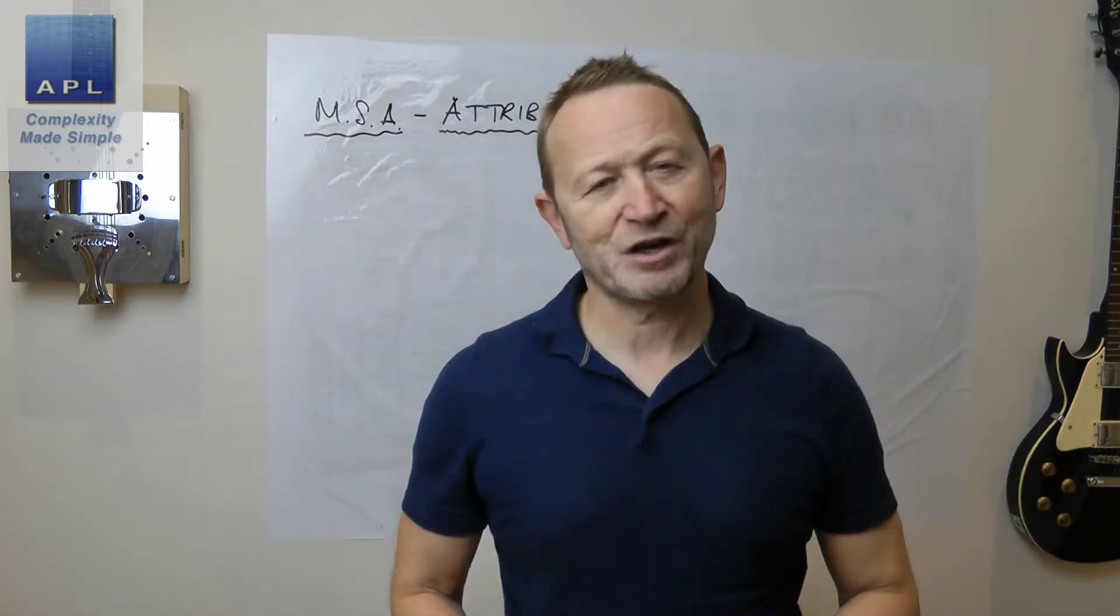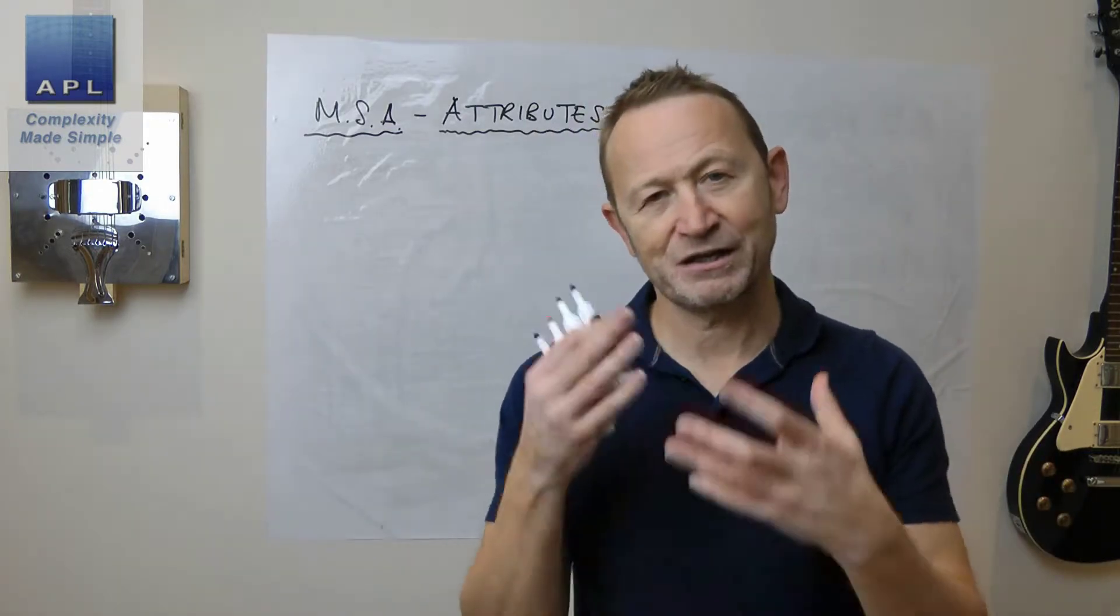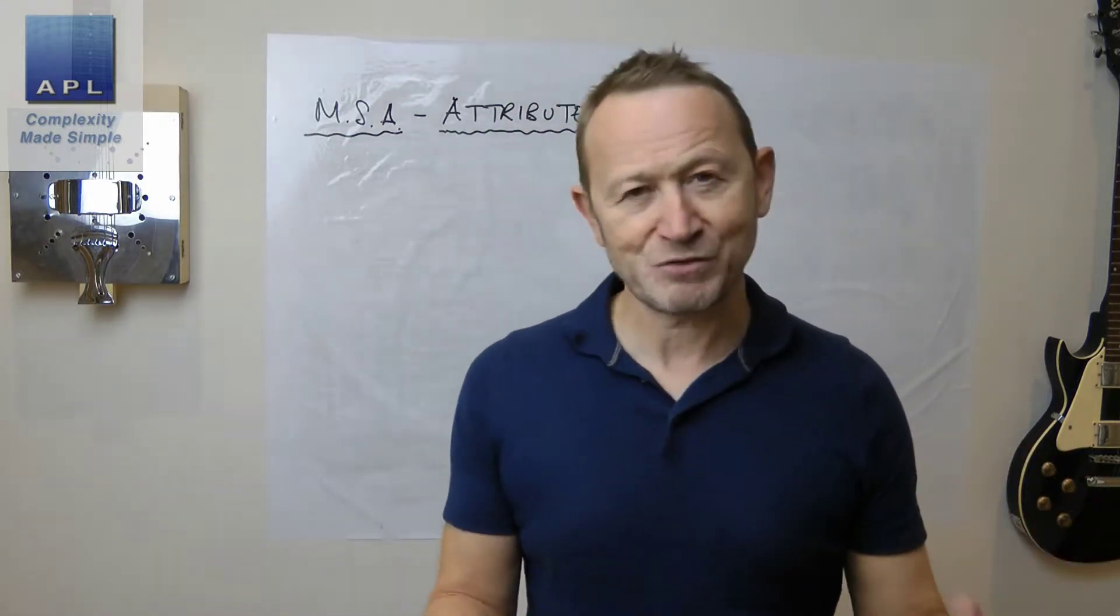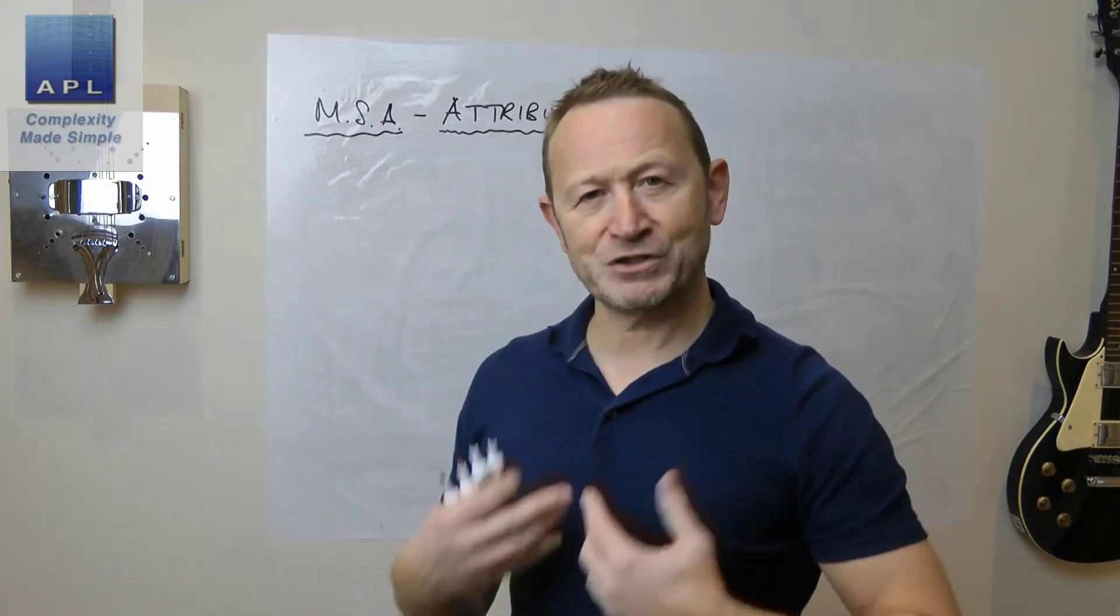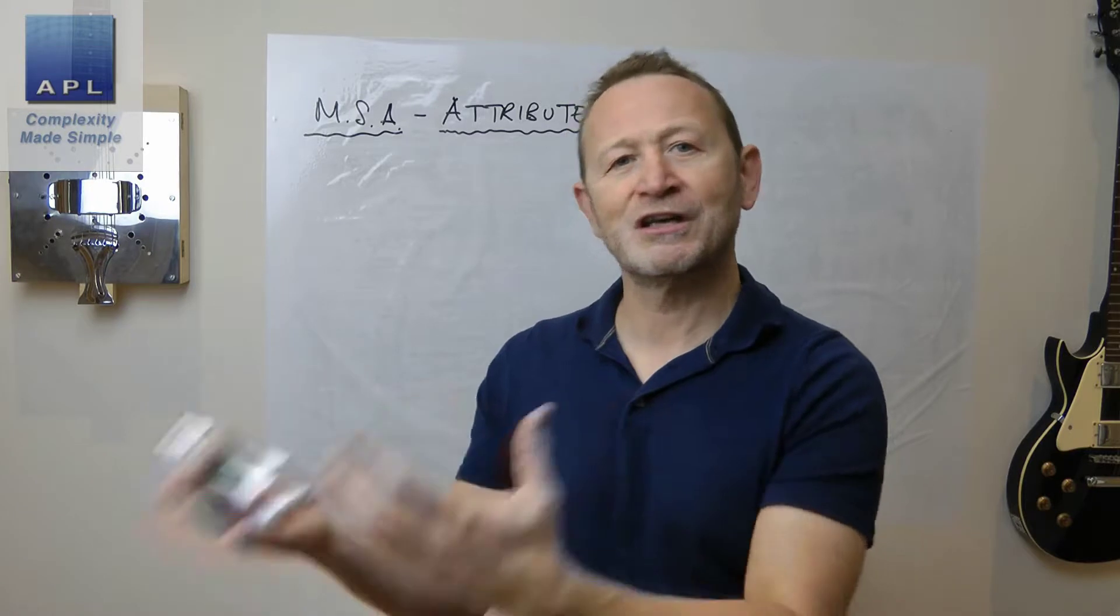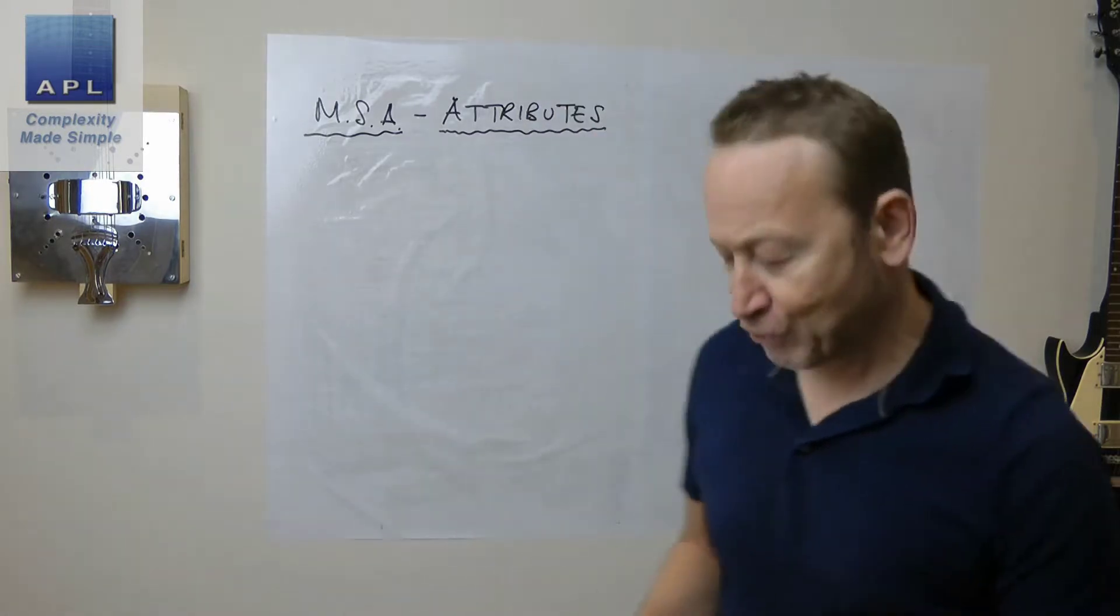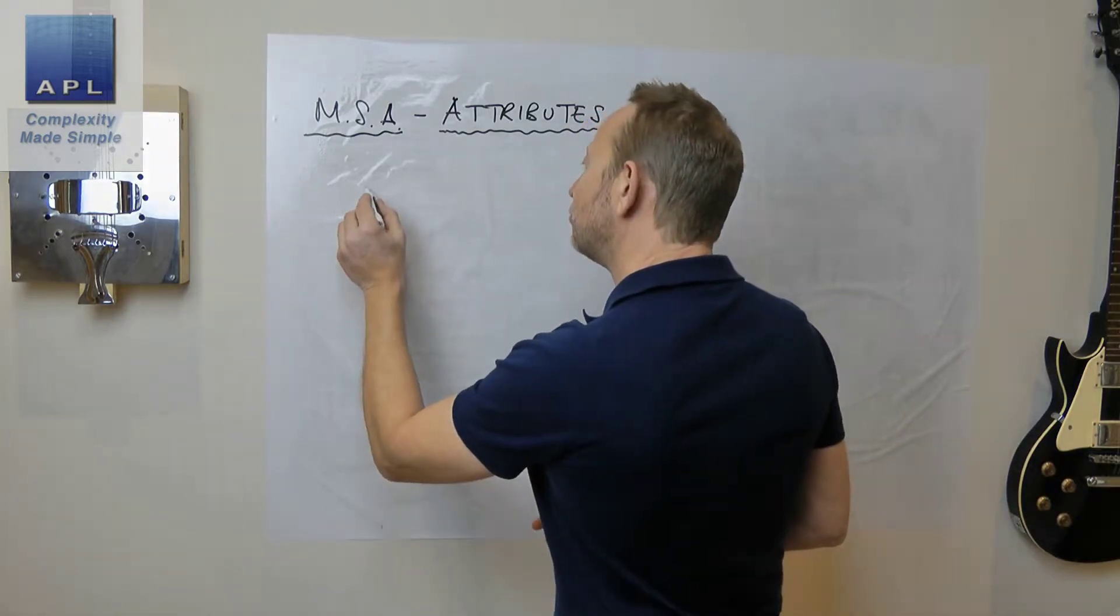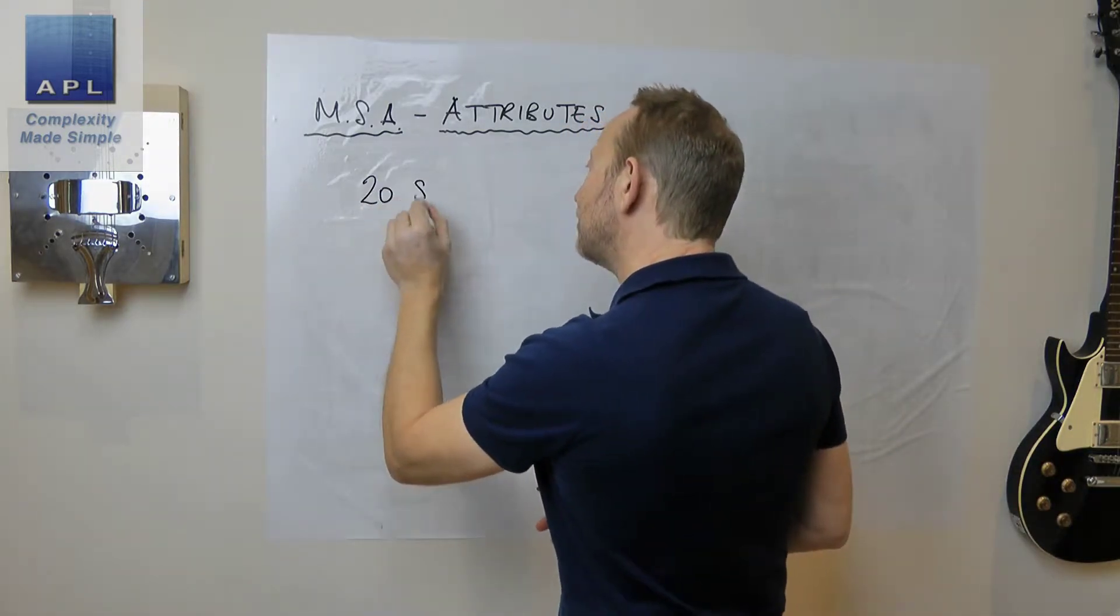So some important things about setting up the MSA for attribute data. The first thing to say is what you're going to have to do. You're going to have to get some samples for the measurement systems to inspect and to decide whether they're good or bad, whether they're pass or fail.